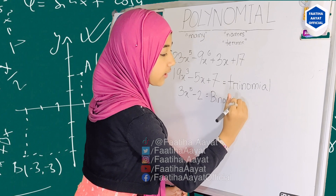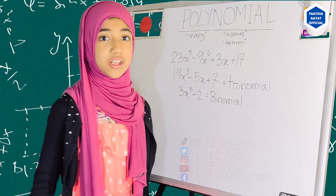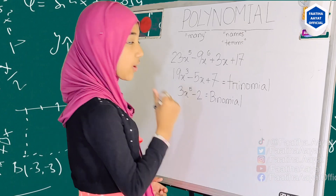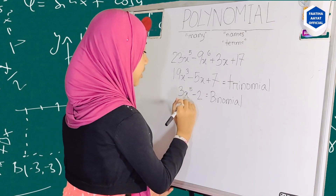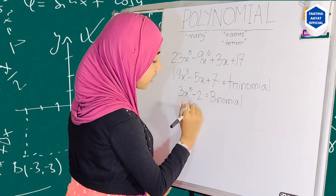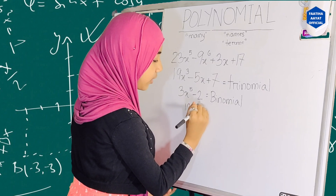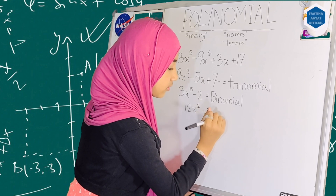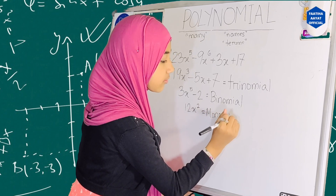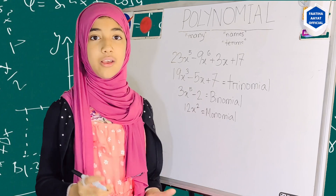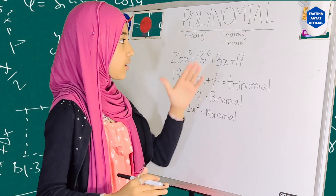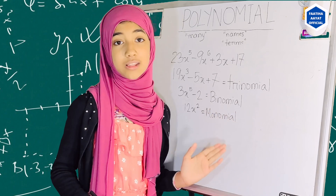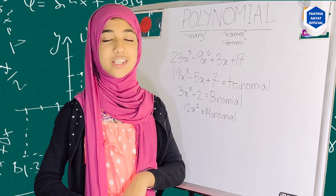And what is one with only one term? That is a monomial. An example of a monomial would be 12x squared. So now I hope you all learned what polynomials, trinomials, binomials, and monomials are. Thank you for watching. Assalamualaikum.